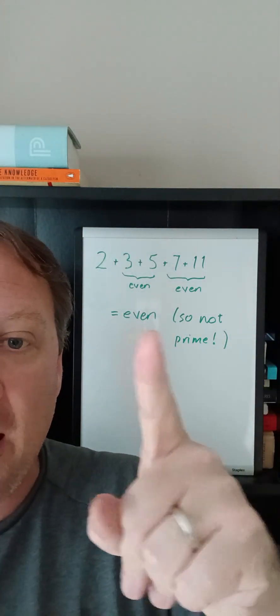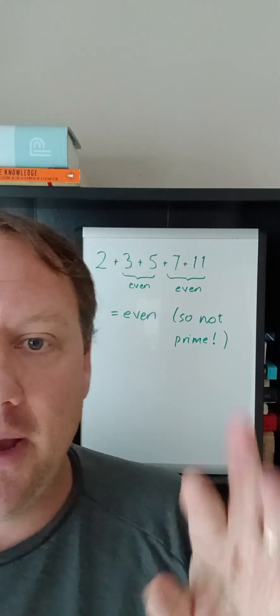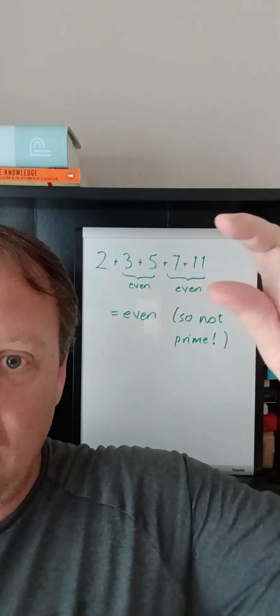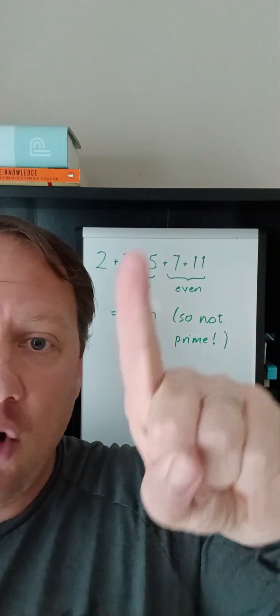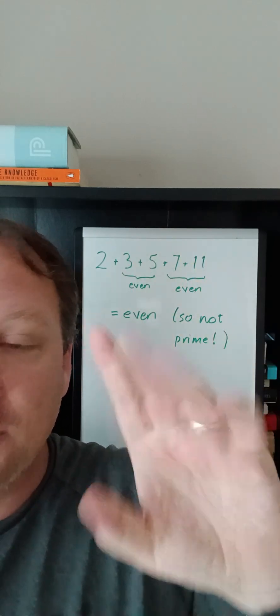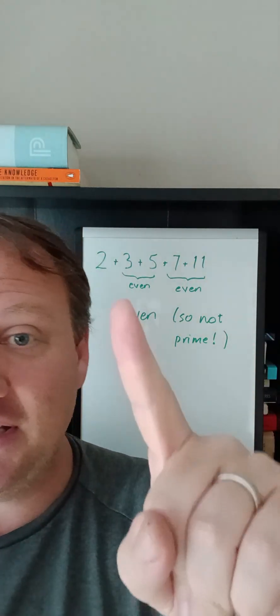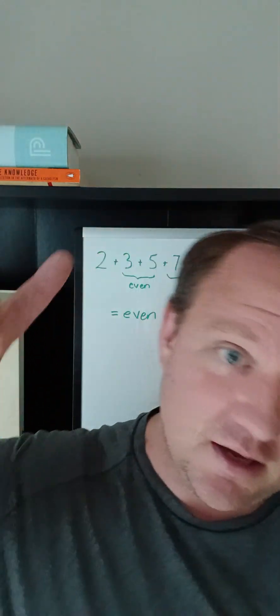And so therefore, whatever this comes out to be, you're not going to get a prime number. And what this really shows is that it doesn't matter what prime numbers you put here, you'll never get a prime number. So this is all basically convincing us that 2 cannot be a part of the sum of primes that we're looking for.